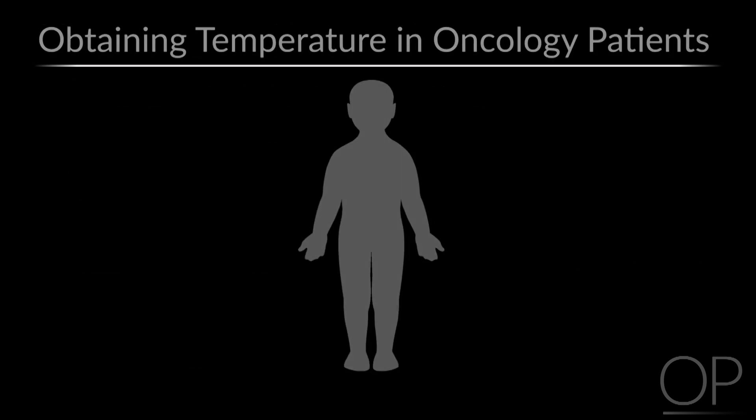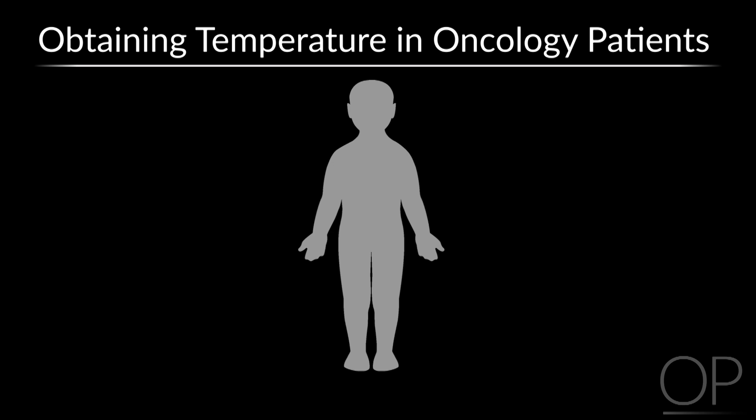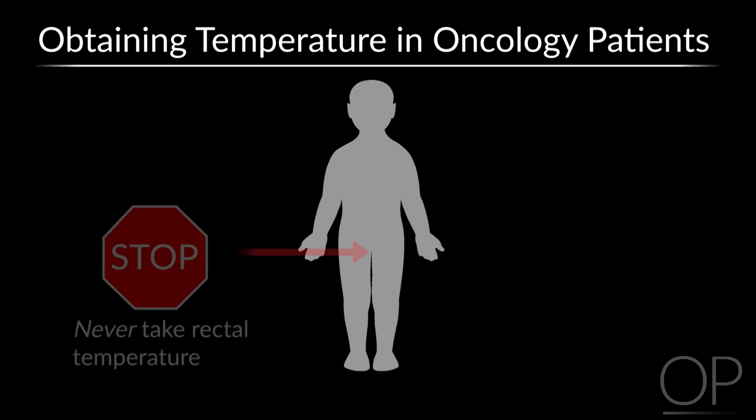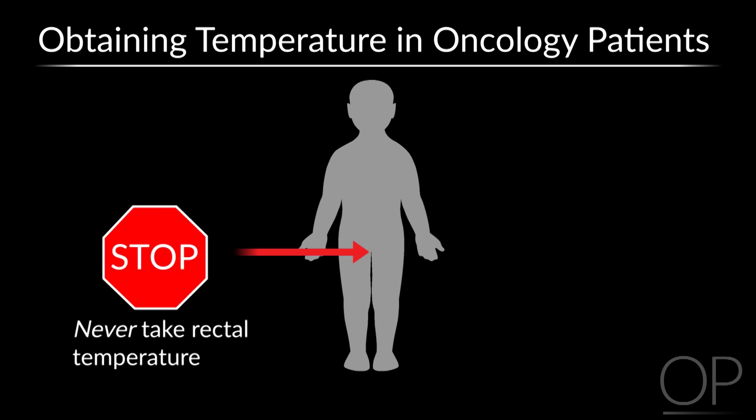Please note that temperatures are taken on oncology patients only orally, never rectally. Particularly in neutropenic patients, the small amount of trauma to the mucosa caused by the placement of a rectal thermometer can lead to tearing of the skin and entry of bacteria into the bloodstream.